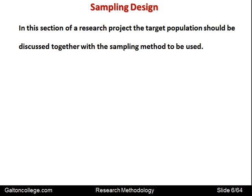Let's start by looking at the sampling design. In this section of a research project, the target population should be discussed together with the sampling method to be used. The sample population should be discussed and the appropriate method for sampling should be selected and discussed.